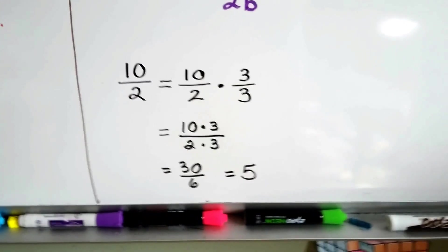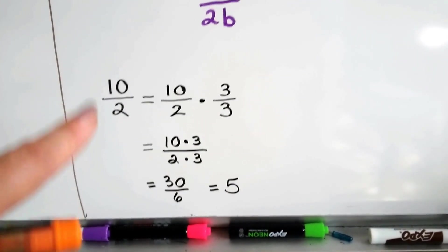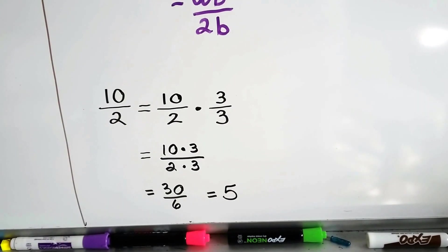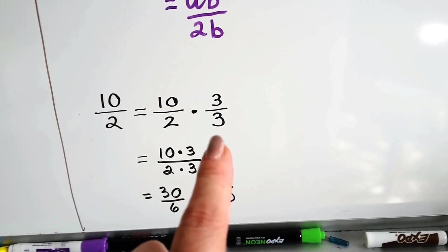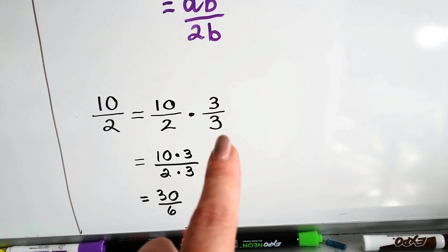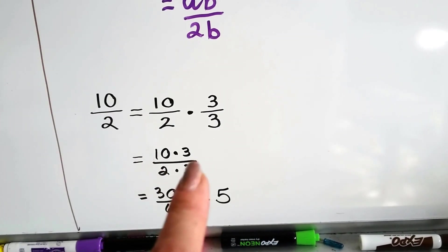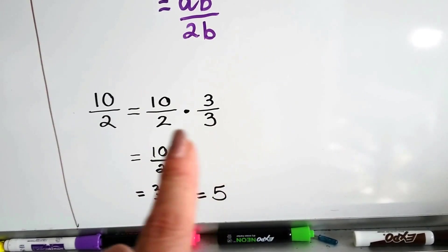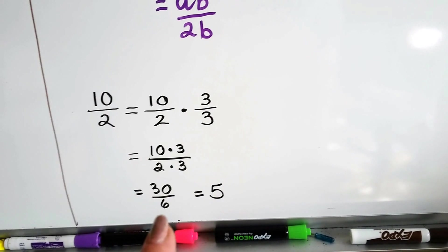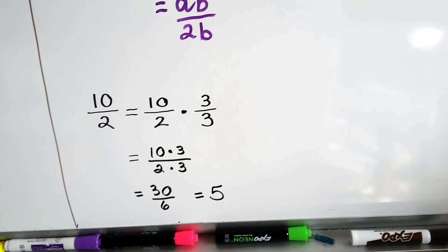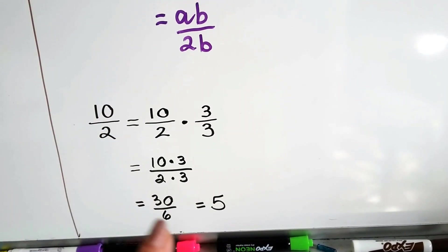Using real numbers, if we had 10 over 2 — we know 10 divided by 2 is 5. But if we had 10 over 2 and we multiplied it by 3 over 3 — because the numerator and denominator are the same, it equals 1 — that would give us 10 times 3 over 2 times 3, which is 30 over 6. Well, 30 divided by 6 is 5, just like 10 over 2. They're equivalent fractions.